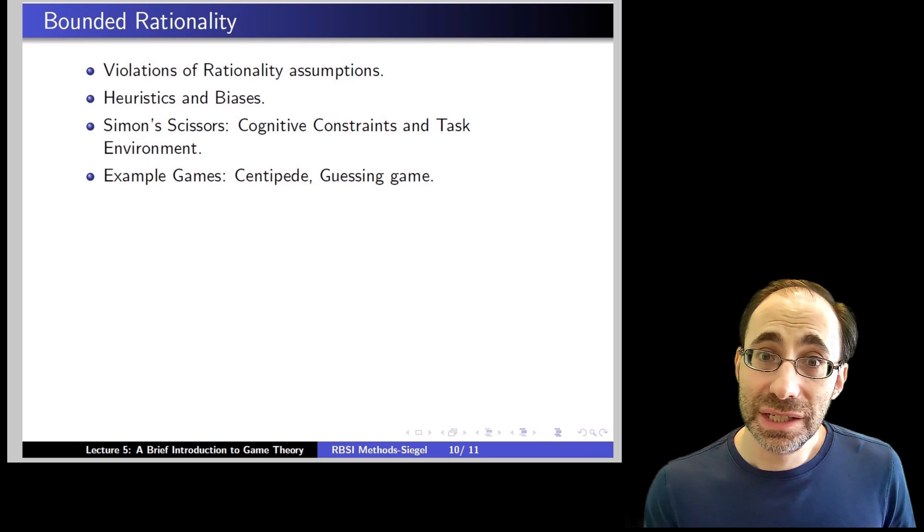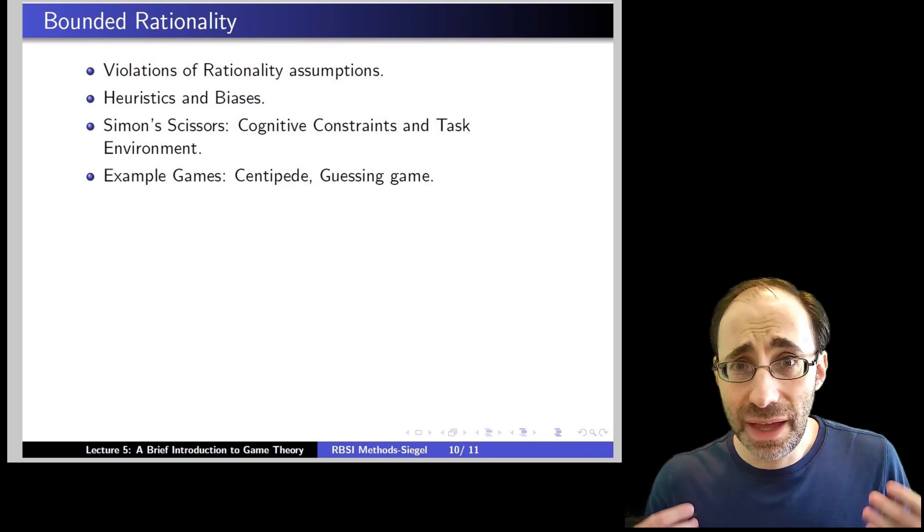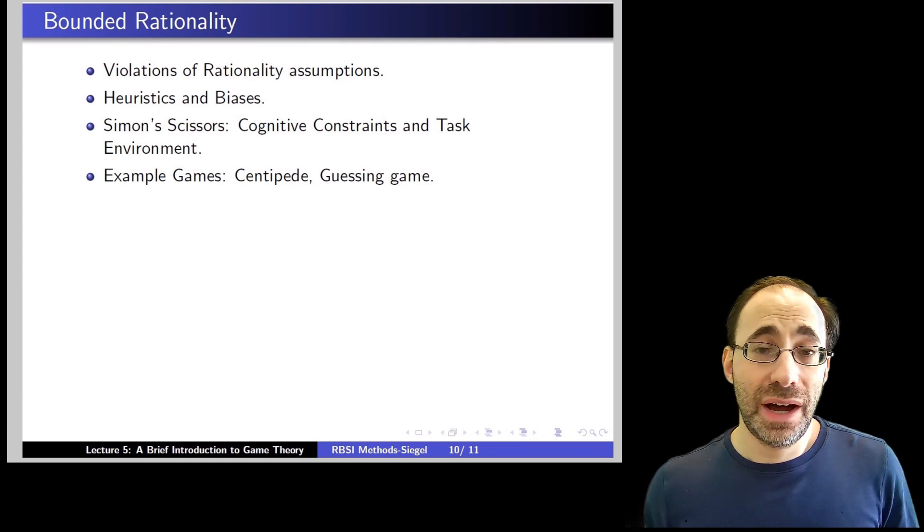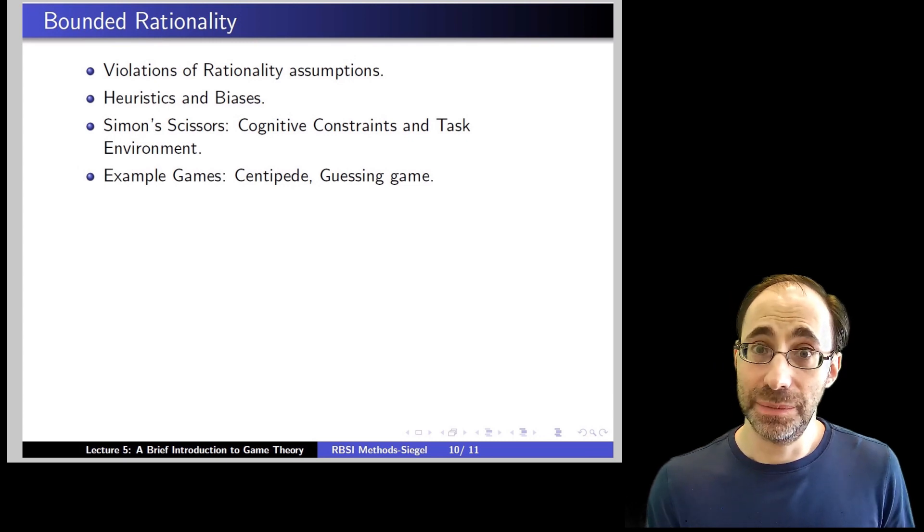These rules of thumb are called heuristics, and they're ways to help us make decisions efficiently and quickly without too much effort. There's a huge body of literature on heuristics and what they are and how they work and how they help us sometimes.